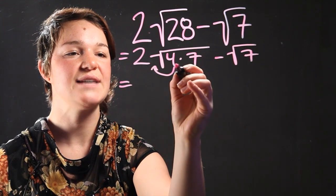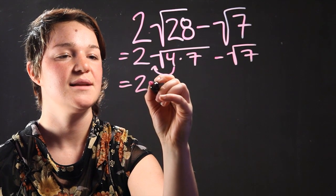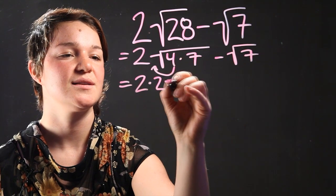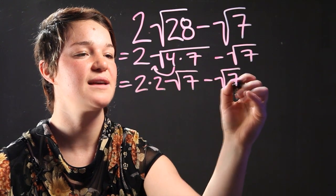So when we take 2 outside of this expression, it's going to become 2 times the square root of 4, which is 2, square root of 7 minus square root of 7.